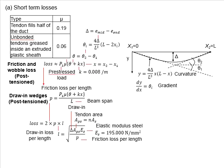Now let us look into the equations to determine the friction and wobble loss for the post-tension member. You know that post-tension member involves casting of the concrete before the stressing of the tendons.